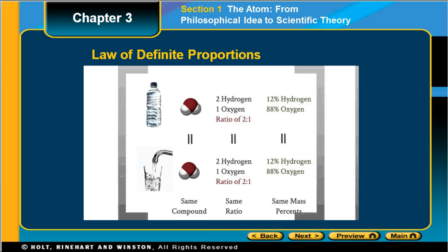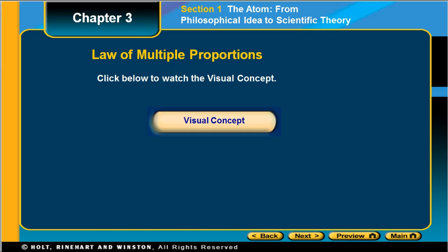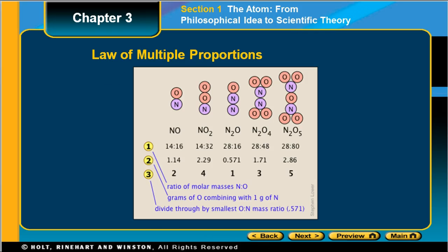For multiple proportions, this is shown with compounds of nitrogen and oxygen. In the first compound listed, you can have NO, which is 14 to 16 by mass, or 1.14 if you're doing a ratio.